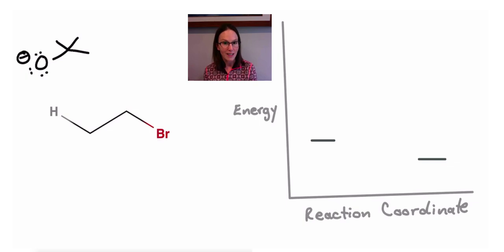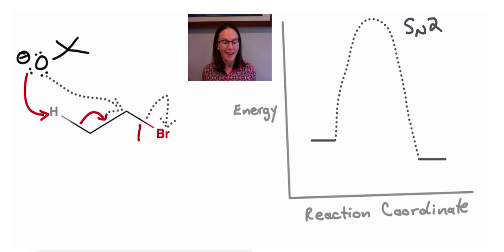Similarly, if we have a strong base that's a weak nucleophile, then the SN2 reaction just isn't possible. The activation energy would be too high, and so that reaction would proceed by an elimination or E2 reaction.